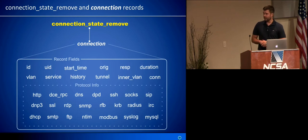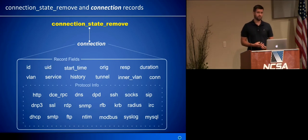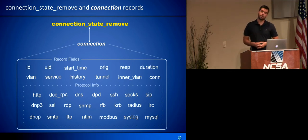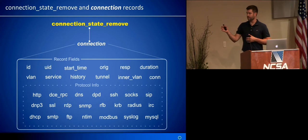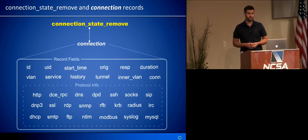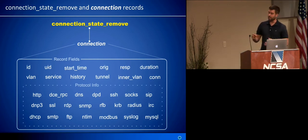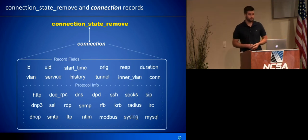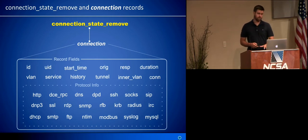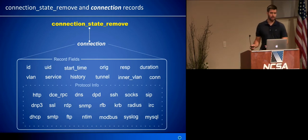In addition to all that, the connection record also has optional fields corresponding to application layer protocol analyzers. If any of those analyzers ran, you can access that protocol information right from the connection record within this event handler. In the case of HTTP, you'd actually be able to reference the user agent or referer field directly from the connection record — very useful access to a ton of information at this stage in the analysis process.